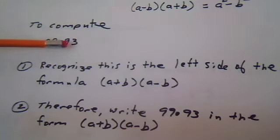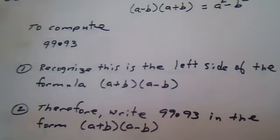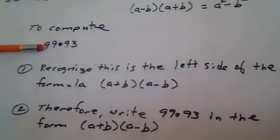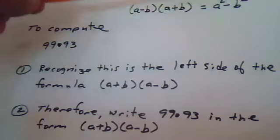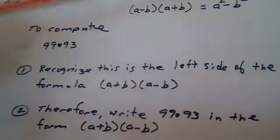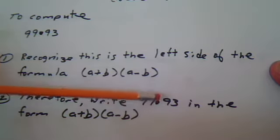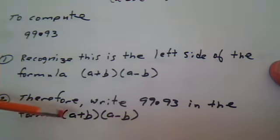So the first thing is to recognize that they gave us the left side, the multiplication version. We need to turn this into the subtraction version using this formula. So write 99 times 93 in this form.